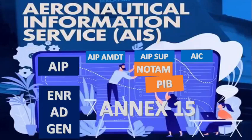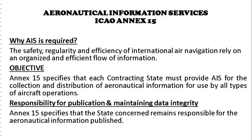The Integrated Aeronautical Information Package is a system of dissemination of information essential to aviation operations and safety. It consists of the Aeronautical Information Publication (AIP), AIP amendments, supplements to the AIP, NOTAMs, pre-flight information bulletins, and aeronautical information circulars. The safety, regularity, and efficiency of international air navigation rely on an organized and efficient flow of information.